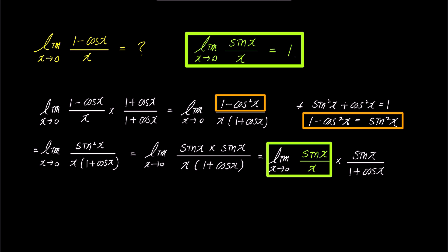Thus, as x approaches 0, sine x over x becomes 1, and the second part of the fraction, sine x approaches 0, while the denominator becomes 1 plus 1, resulting in a final limit value of 0.